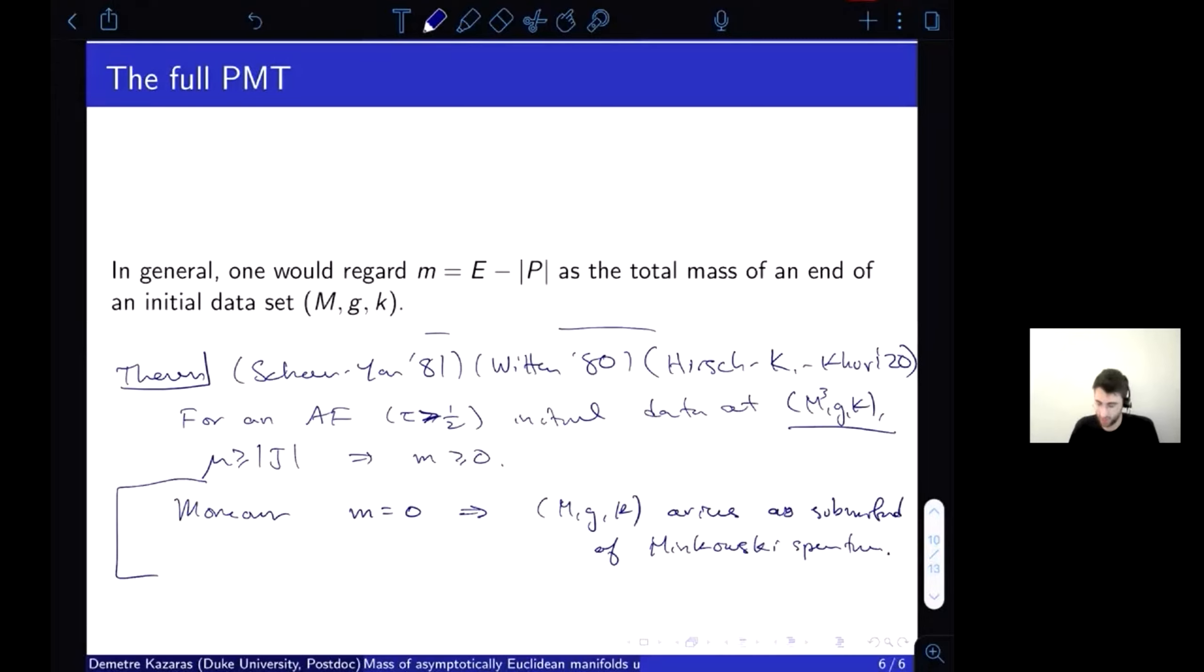So I would like to describe Witten's proof, which works in the time symmetric and this general setting, in particular how it relates to the more recent proofs that I give with my collaborators. Yeah, so in the next lecture we'll introduce the formalism of spinors and the calculation that Witten does to prove the positive mass theorem, and then in the last lecture we'll discuss the recent versions. Okay, thank you, see you then.